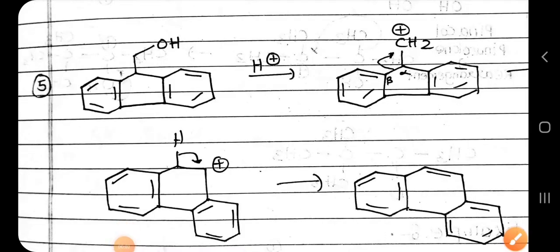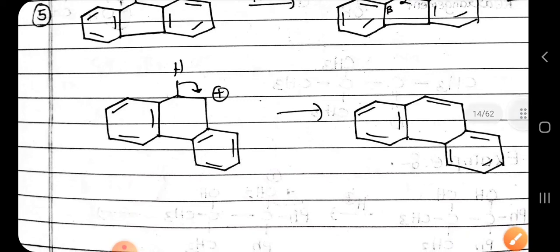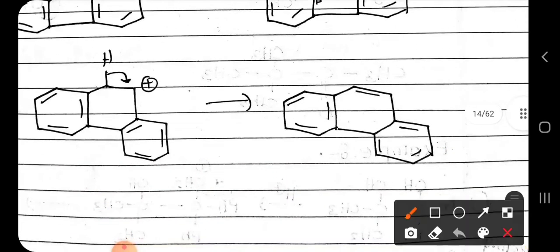Here is another example from the Wagner and Meerwein rearrangement reaction. An alcohol is present, and again the oxygen carries a lone pair, so it gets protonated to form OH₂⁺, which leaves as water, forming a carbocation. Again, labeling alpha and beta bonds, ring expansion takes place and a six-membered ring is formed. Since there is no nucleophile in the system, elimination will take place and we get the final product.